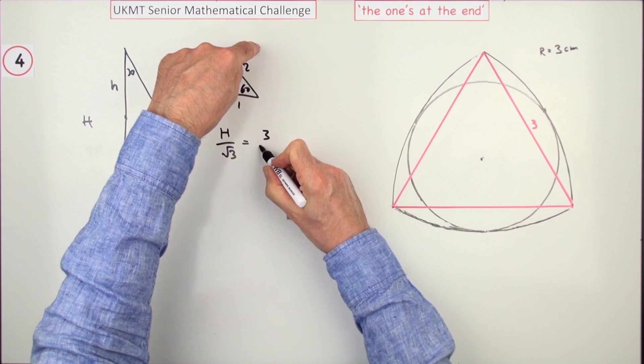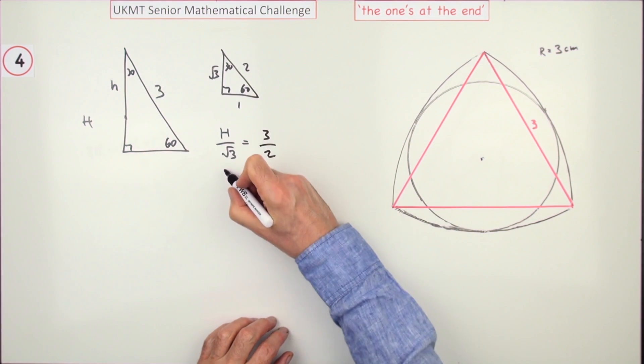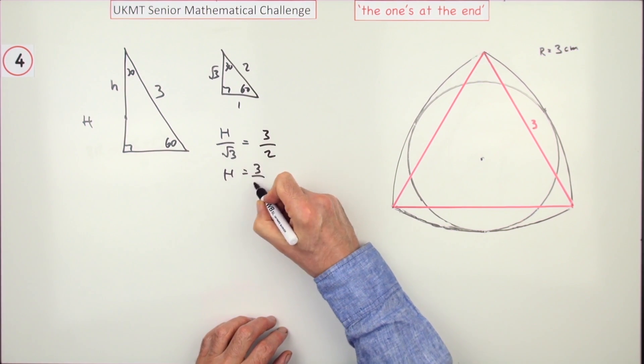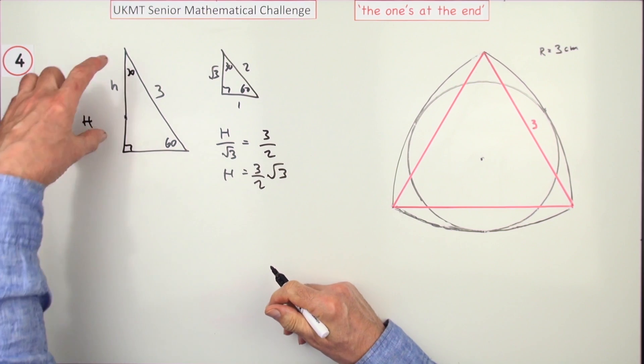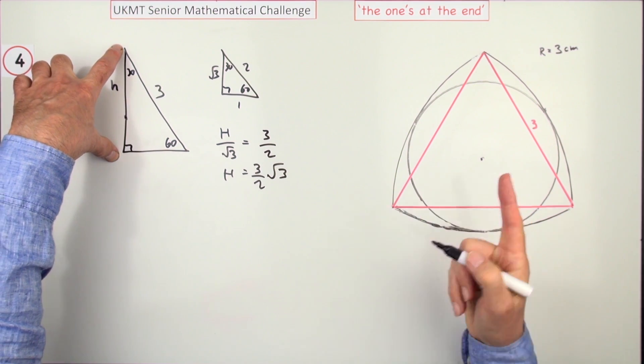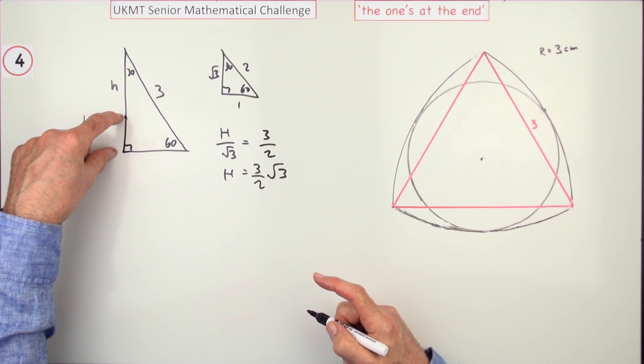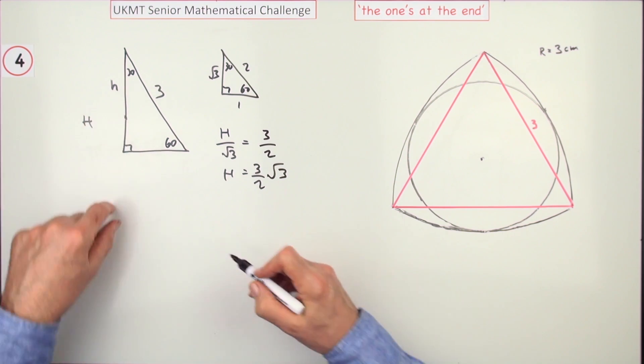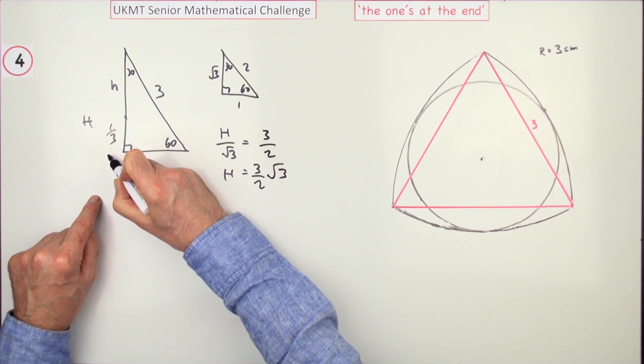So h equals 3 upon 2√3. That's the whole distance then. Knowing this little bit about the centroid, that the centroid lies a third of the way up.